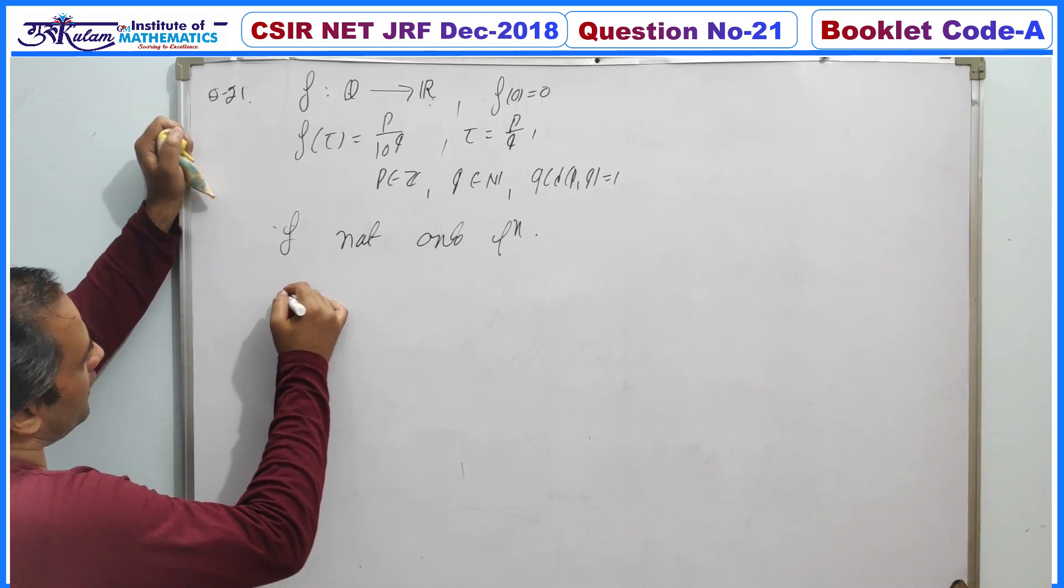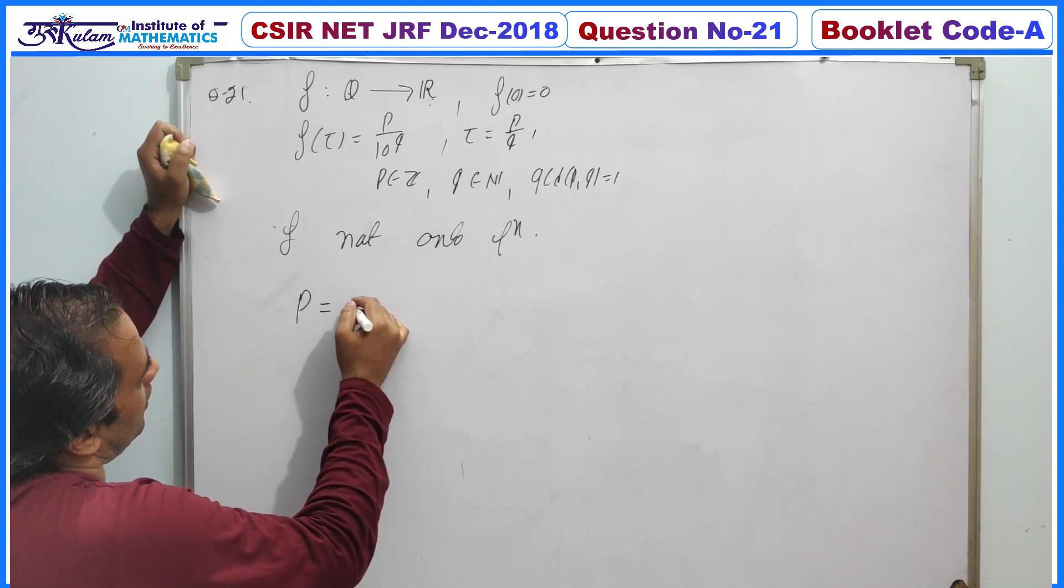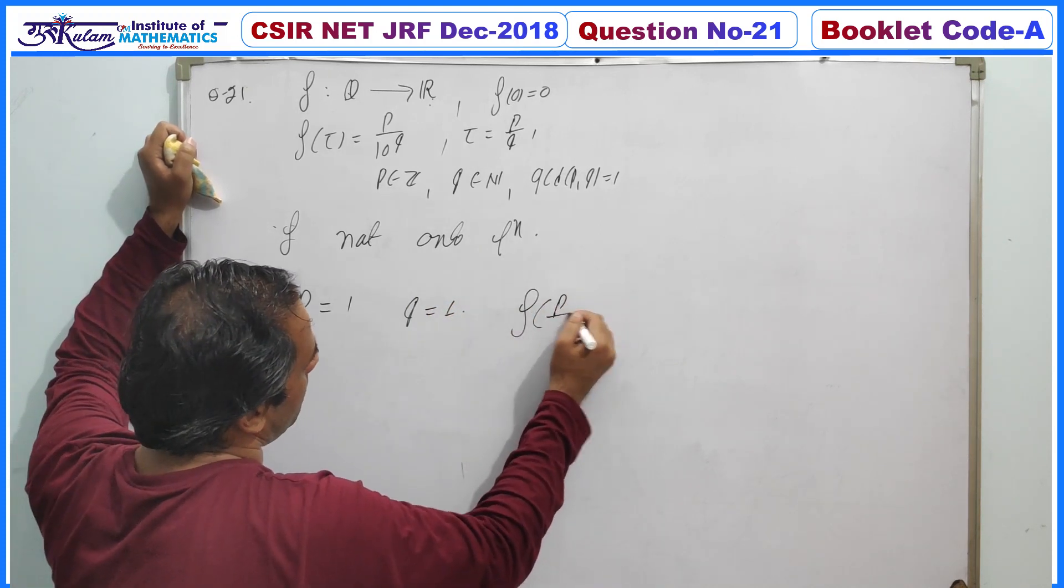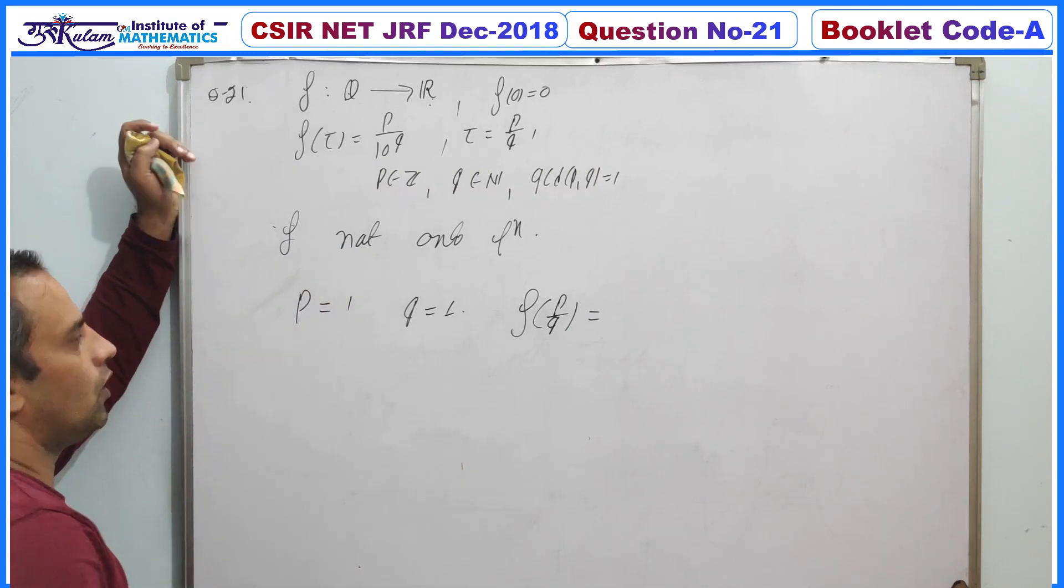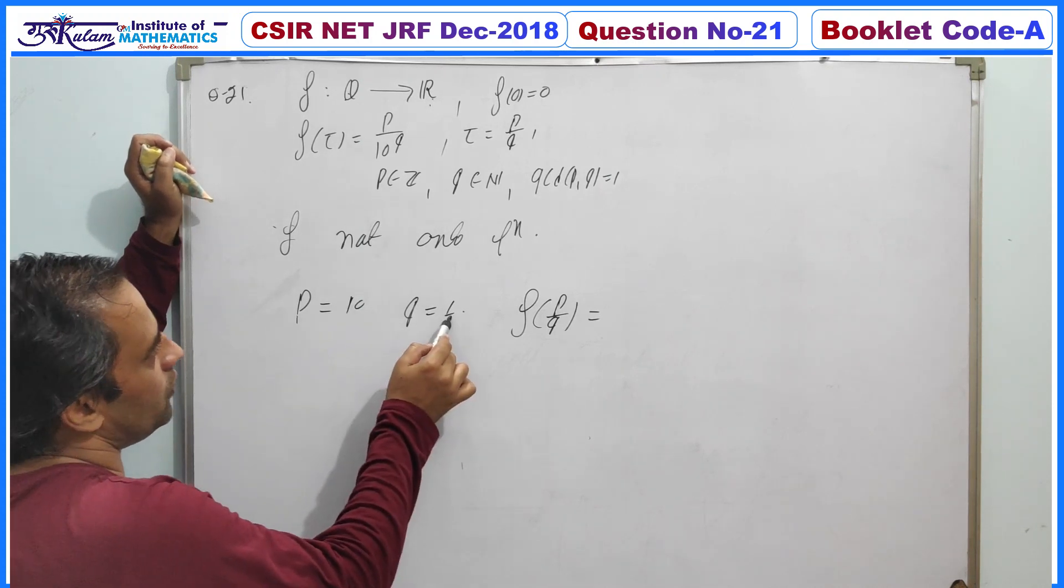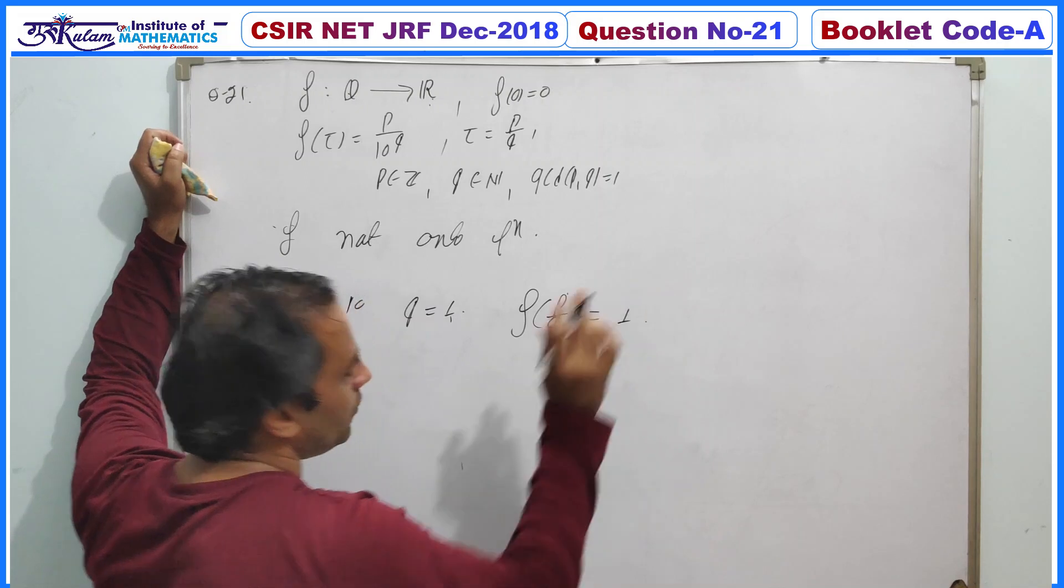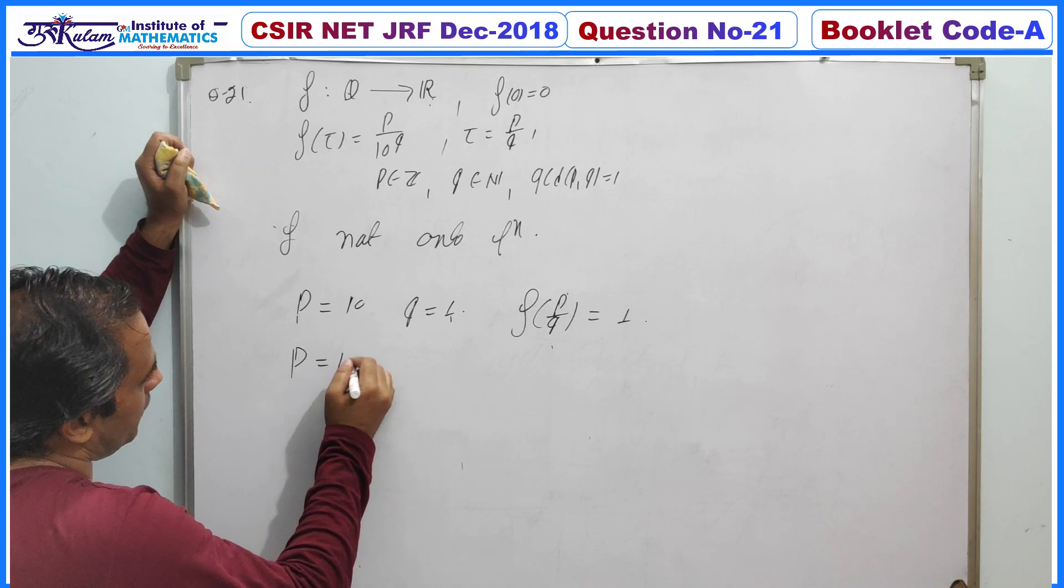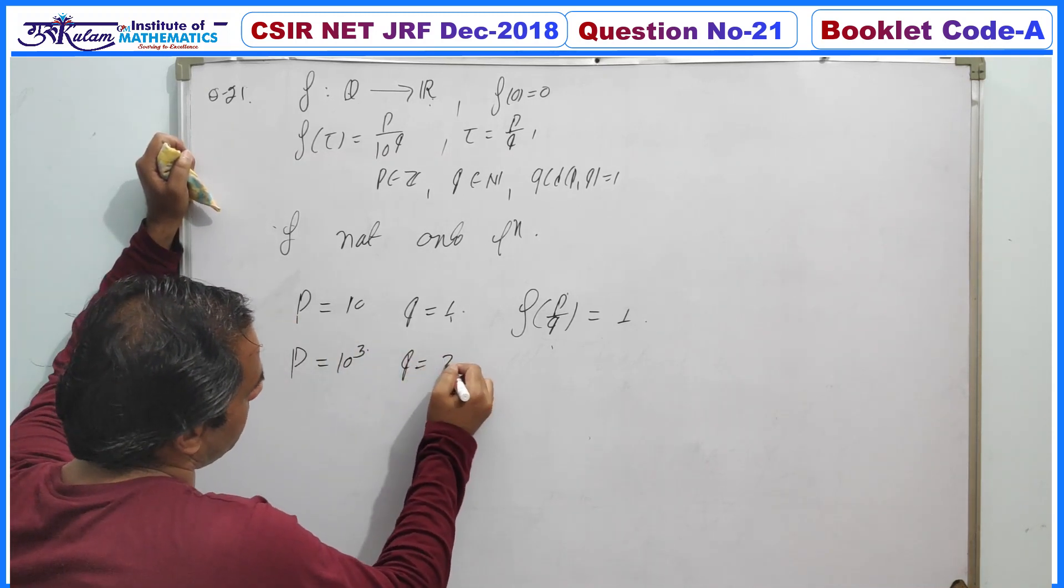Next, if we will take p equals 1 and q also equals 1, so f of p by q equals... or we can take p equals 10 and q equals 1. So gcd of p and q is 1 and the image of p by q must be... again if we will take p equals 10 to the power 3 and q is simply 3.